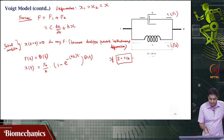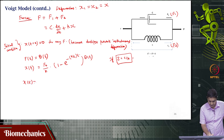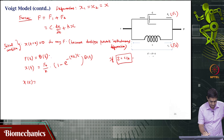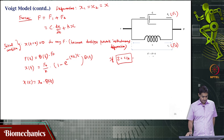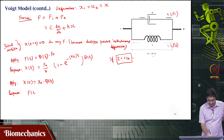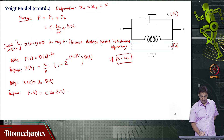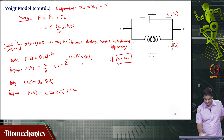Now suppose instead of a force I am applying a deformation. If I apply x(t) equal to x₀ times θ(t), then the response in force F(t) is C times x₀ times the Dirac delta function δ(t), plus k times x₀ times θ(t). The applied deformation is a step change, and this is the resulting force response.